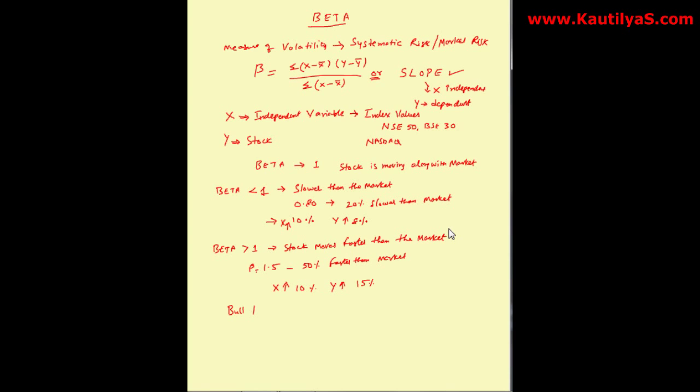In a bull trend, where prices of stocks are increasing, it is better to buy high beta stocks. In a bearish trend, where prices of stocks are declining, invest in low beta stocks.